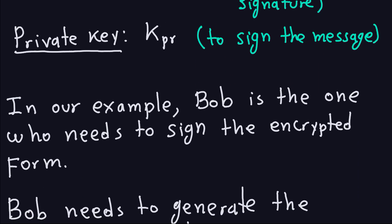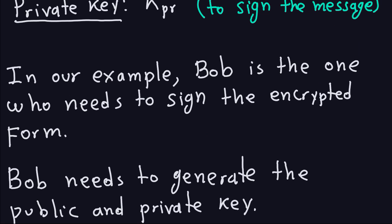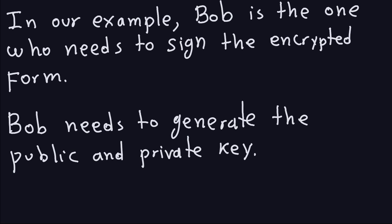If you remember the example from the last video, Bob is the one who needs to sign the encrypted form because he's sending the form purchases. Bob needs to generate the public and private key, because whoever wants to sign messages, that person has to generate something that is public, which anyone can check. And this is what they are going to use to check that Bob's signature is valid. The private key is going to be private for Bob, so Bob is going to keep this information private.